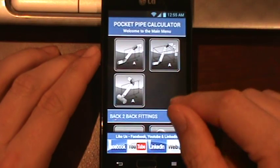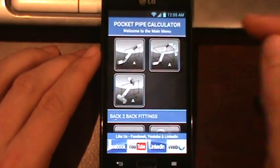We'll scroll back up and we'll do a brief run-through of some of the screens. We'll start with the odd angle offset.